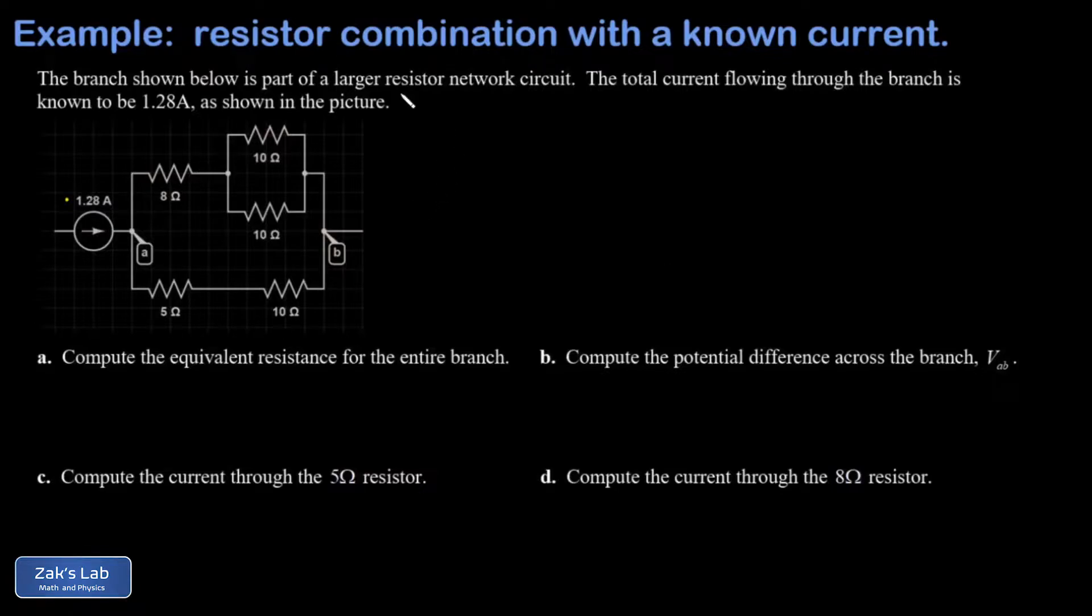To begin the simplification, we notice that we have a parallel combination of 10 ohm resistors in the upper portion of the branch. These combine according to the parallel combination rule: one over the equivalent resistance is the sum of the reciprocals of the two resistances. That equivalent resistance comes out to 5 ohms, and then we redraw the circuit.